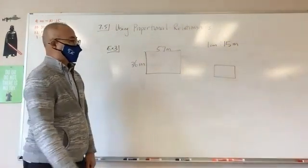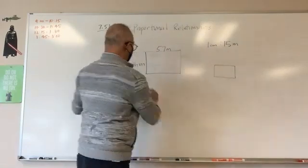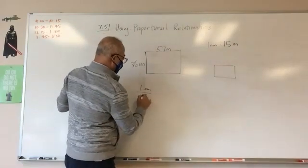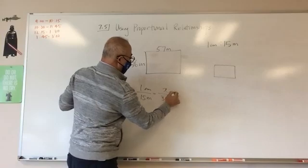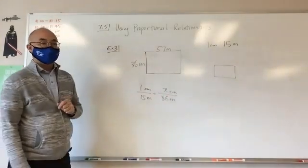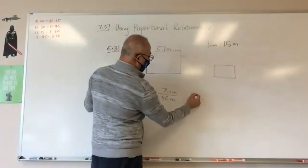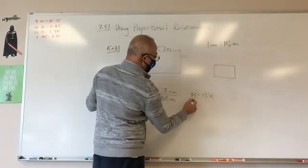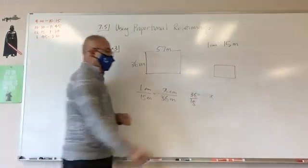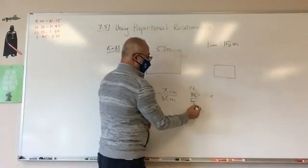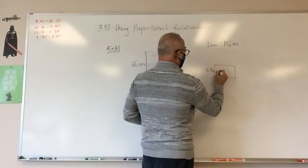Let's go ahead and find out this guy here first. So 1 centimeter is equal to 15 meters. And I'm going to represent 36 meters by, I don't know how many centimeters. Again, centimeters and meters, I don't have to worry about it. Cross multiply: I'm going to get 36 equals 15x. Divide by 3, divide by 3. 2.4 centimeters.